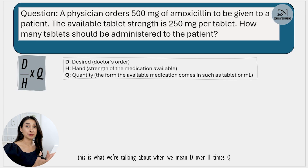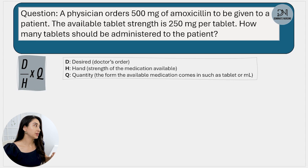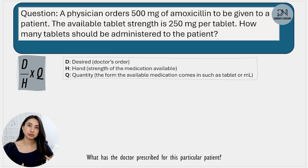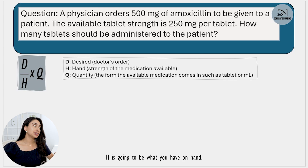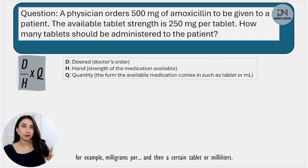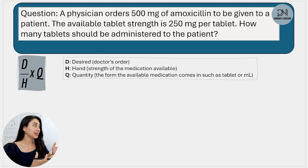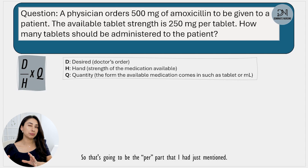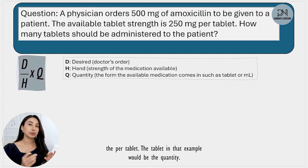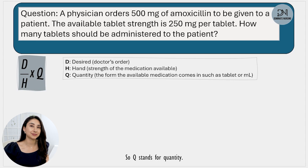Looking at the screen, this is what we mean by D over H times Q. D is going to be the desired dose, meaning the doctor's order — what has the doctor prescribed for this patient? H is what you have on hand, so the strength of the medication available, typically in milligrams per tablet or milliliters. Lastly, Q stands for quantity — for example, if I said 250 milligrams per tablet, the tablet would be the quantity.